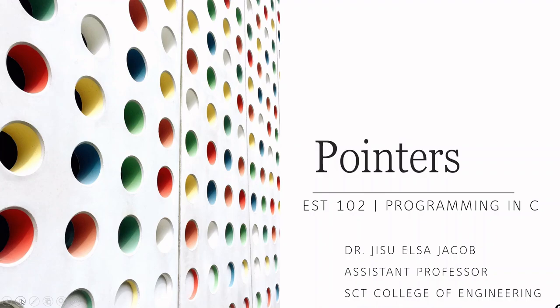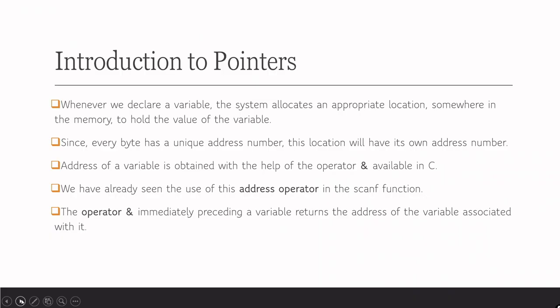The next topic is pointers. First, before going to what a pointer is, let us check how to get the address of a particular variable. Whenever we declare a variable, the system allocates an appropriate location somewhere in memory to hold the value of that variable. Since every byte has a unique address number, this location will have its own address number. The address of a variable is obtained with the help of the address operator '&', which is available in C. We have already seen the use of this address operator in the scanf function.